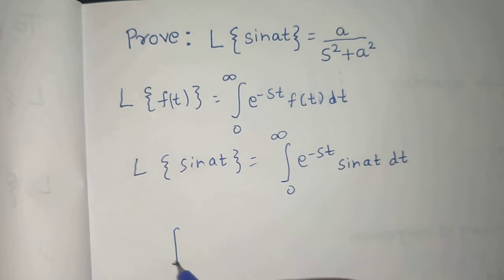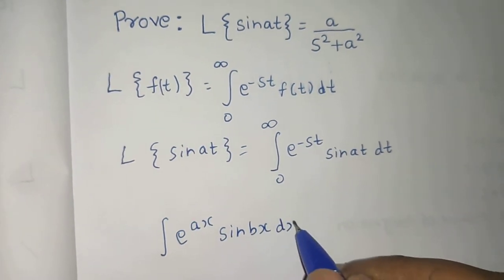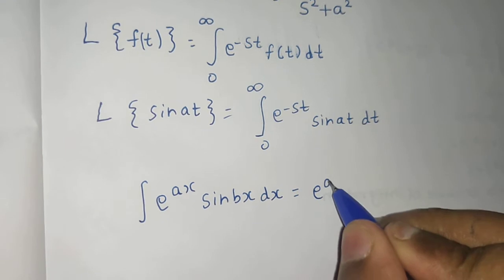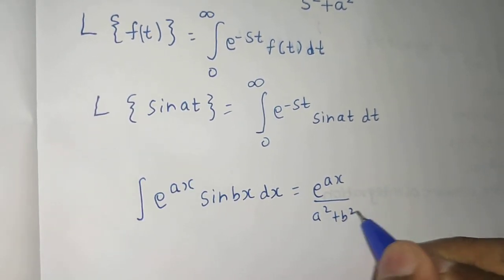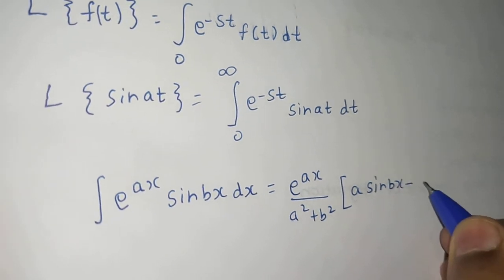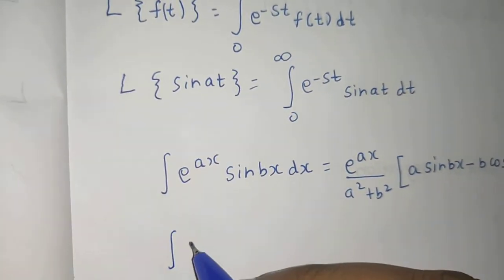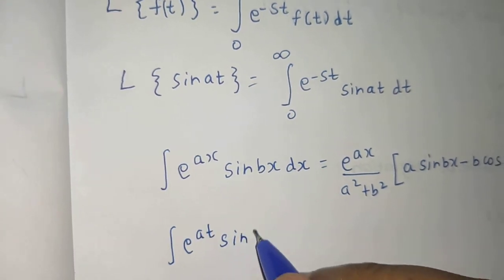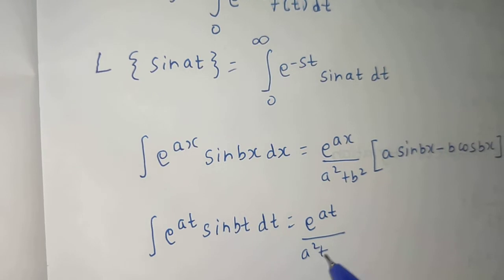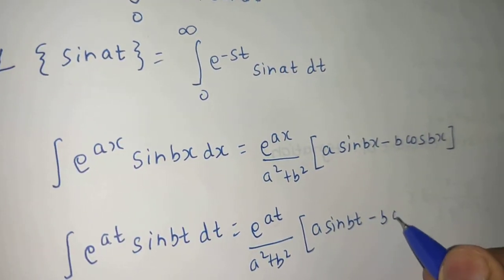Now we know one standard formula: the integral of e to the power ax times sine bx dx equals e to the power ax divided by a squared plus b squared, times the quantity a sine bx minus b cos bx. We can write this for t: the integral of e to the power at times sine bt dt equals e to the power at over a squared plus b squared, times a sine bt minus b cos bt.